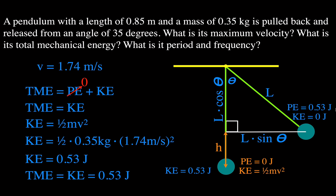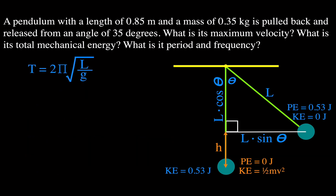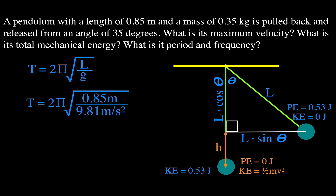Now we figure out the period and frequency. Since we know the length, we use the equation: period equals 2 times pi times the square root of the length divided by g, where g is 9.81 m/s² — the acceleration due to gravity, not grams. That's 2 times pi times the square root of 0.85 divided by 9.81 m/s², assuming this pendulum is on Earth. The period of that pendulum is 1.85 seconds.